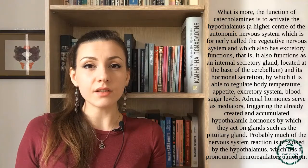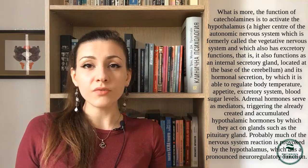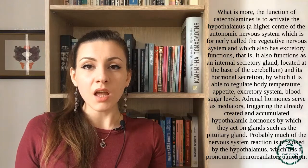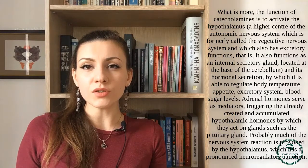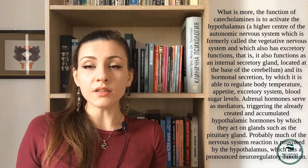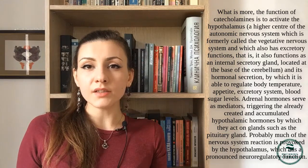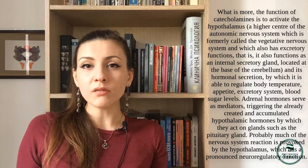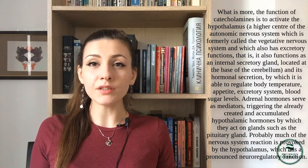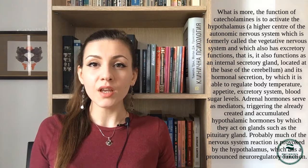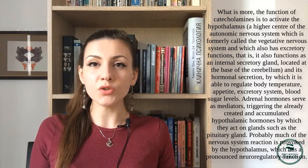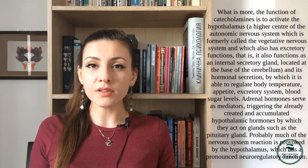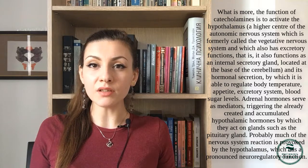Furthermore, the function of catecholamines is to activate the hypothalamus — a higher center of the autonomic nervous system, formerly called the vegetative nervous system — which also has excretory functions, acting as an internal secretory gland located at the base of the cerebellum. Through its hormonal secretion, it is able to regulate body temperature, appetite, the excretory system, and blood sugar levels. Adrenal hormones serve as mediators triggering the already created and accumulated hypothalamic hormones, by which they act on glands such as the pituitary gland.